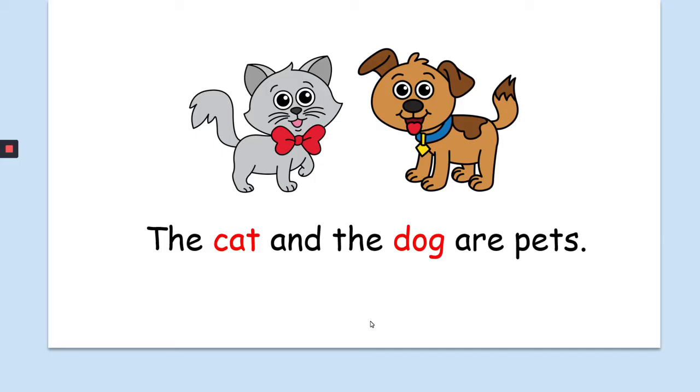Now we have a picture of two animals. We have a cat and a dog. I want to say that the cat and the dog are pets. Let's see what the words say. The cat and the dog. What is d-o-g? Dog. The cat and the dog are p-e-t-s, pets. So the cat and the dog are pets.